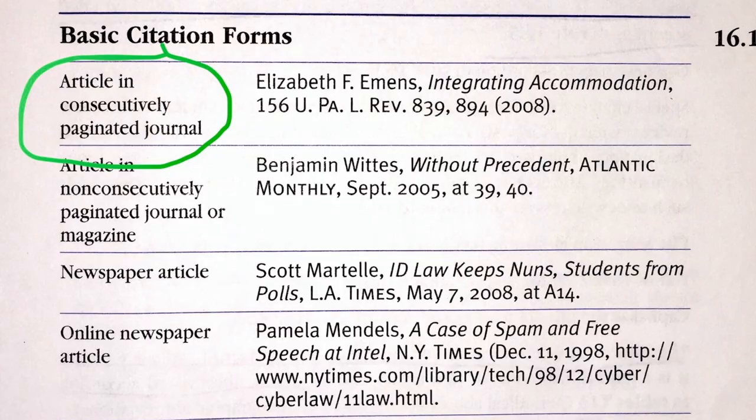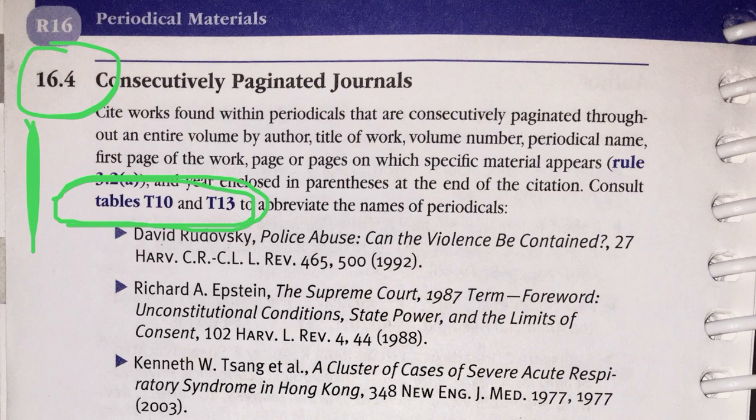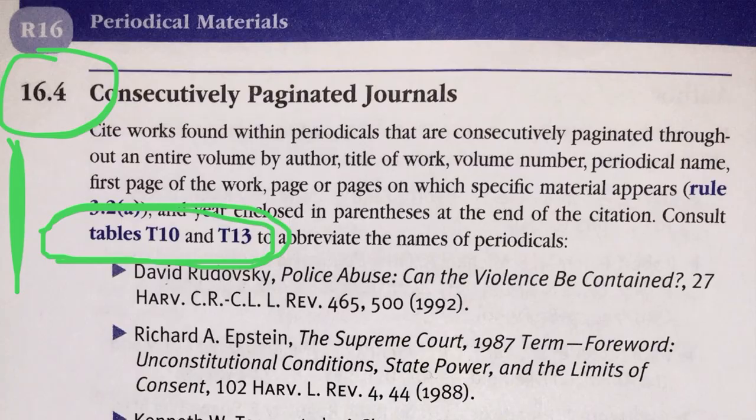To review, when you're putting down the rules you've used: at this point you would have put down Rule 16.1 for the basic citation form structure, Rule 16.2 for the author, Rule 15.1, and 16.3 for the title. Let's see what's next. We've established that we're in a consecutively paginated journal, so we are going to use Rule 16.4, not Rule 16.5, which is for non-consecutively paginated journals. Rule 16.4 says: cite works found within periodicals that are consecutively paginated throughout an entire volume by author, title of work, volume number, periodical name, first page of the work, page or pages on which specific materials appear, and year enclosed in parentheses at the end of the citation. This basically recites what you saw in the basic citation forms, but it's helpful to go back through again because it's really easy to miss stuff.